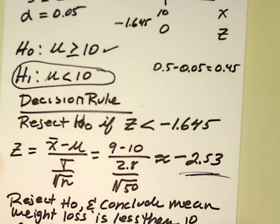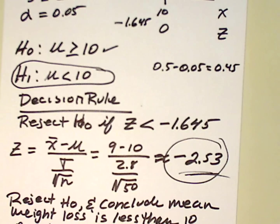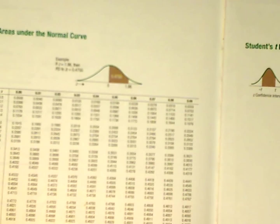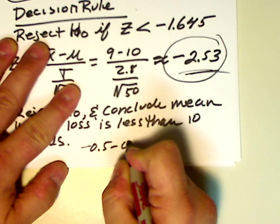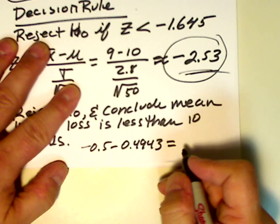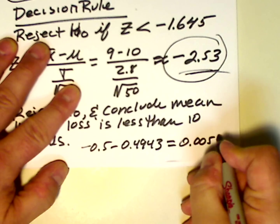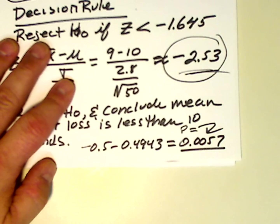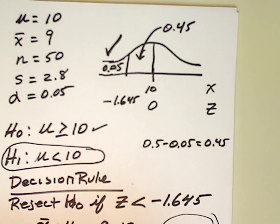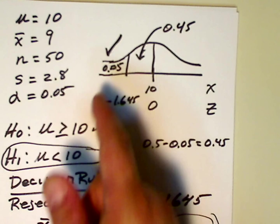We can also calculate the p-value. The p-value is the area associated with negative 2.53. Going into our textbook, negative 2.53 corresponds to 0.4943 — that's the central area. So we take 0.5 minus 0.4943, which equals 0.0057. That's our p-value. The p-value indicates the likelihood that we're going to get a value of 9 or less in the tail.